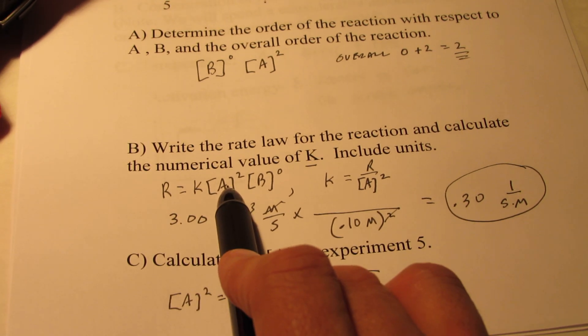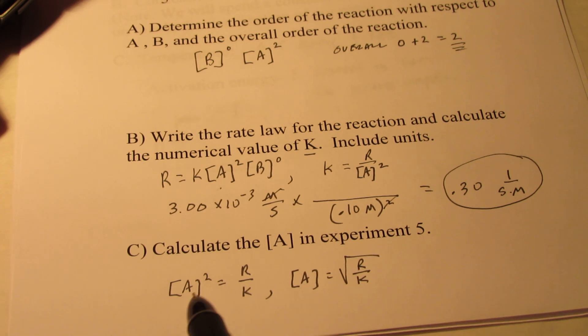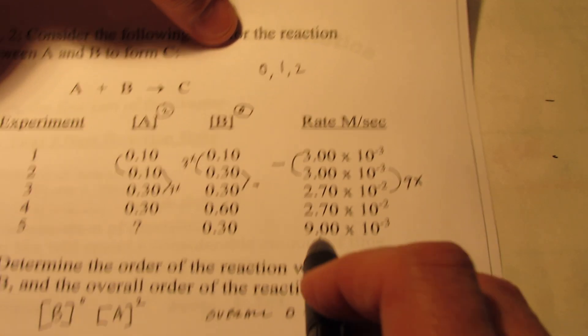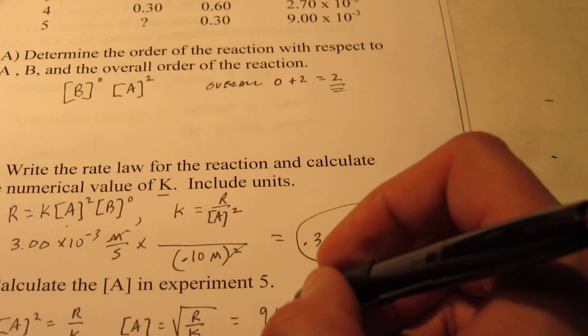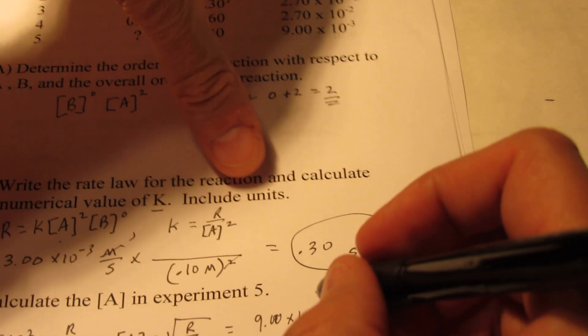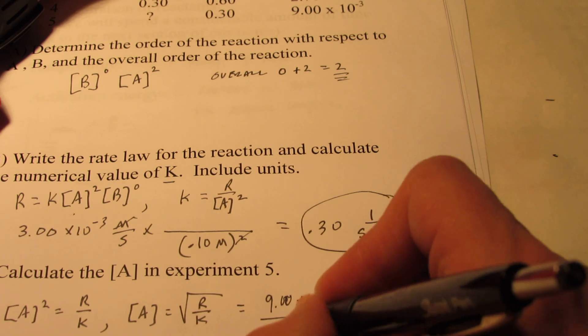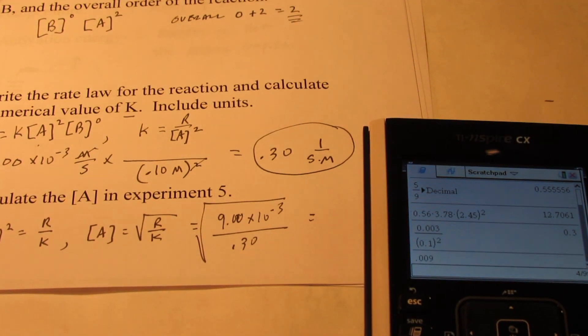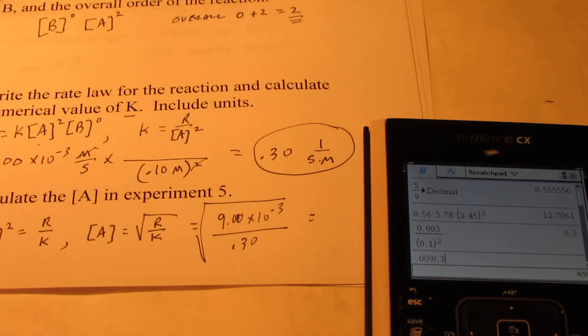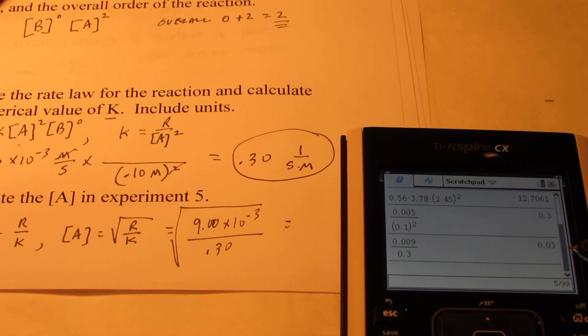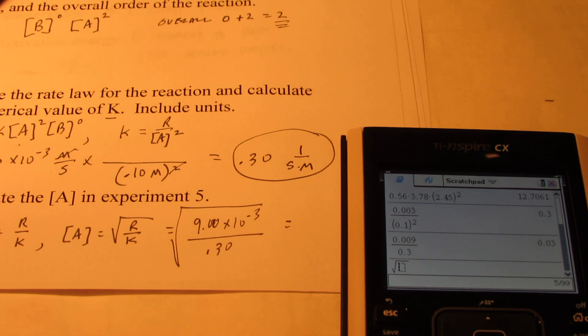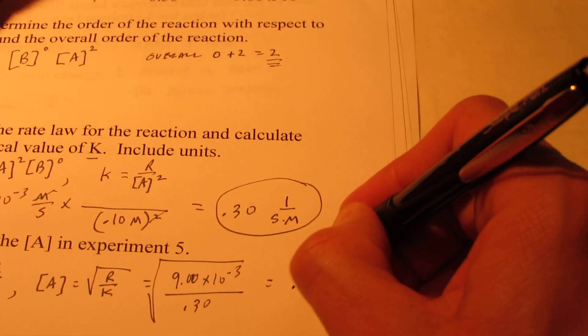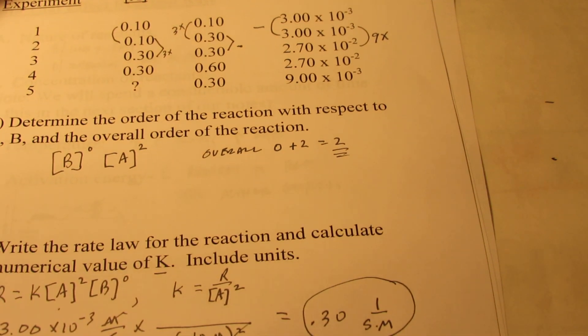See, A squared would be, I bring K over to the other side, R over K. But if I just want A, I would have to square root both sides. So let's see what that would be. The rate during the fifth experiment is 9.00 times 10 to the negative third divided by my constant, which is 0.30, and then we'll square root that. So let's see what we get. 0.009, that's 9 times 10 to the negative third, divided by 0.3 equals, well my answer is not 0.03, we still have to square root that. So I'm going to go control, square root that answer, and I get 0.17. So the concentration of A during that fifth experiment would be 0.17 molar.